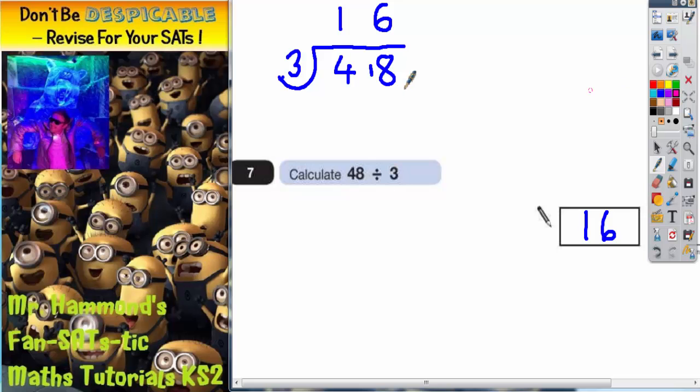If you haven't learnt that way, you can do it using the chunking method. Again, you set it up in the same way, 3's into 48. The chunking method is like repeated subtraction. So you repeatedly subtract chunks of 3 from 48 until you've got nothing left.